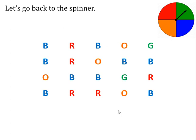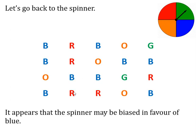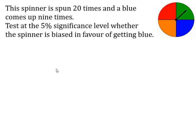But if you look carefully at these results, there might be something else you spot, because not only are there quite a few very few greens, but there are also lots of blues. So another question we might ask is whether the spinner is biased in favour of blue — in other words, is there a probability of more than a quarter of getting blue? The spinner is spun 20 times and blue comes up nine times. Test at the 5% significance level whether the spinner is biased in favour of getting blue.